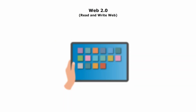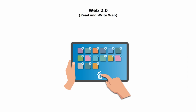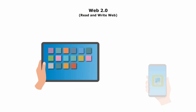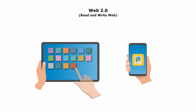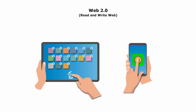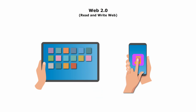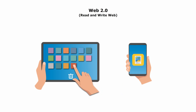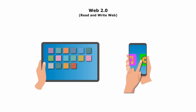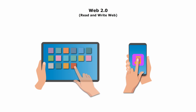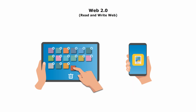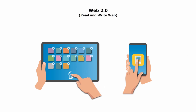The third feature is mobile compatibility. With the rise of smartphones and mobile devices, Web 2.0 emphasizes mobile compatibility and responsive design. Websites and applications are optimized for various screen sizes and touch-based interactions.